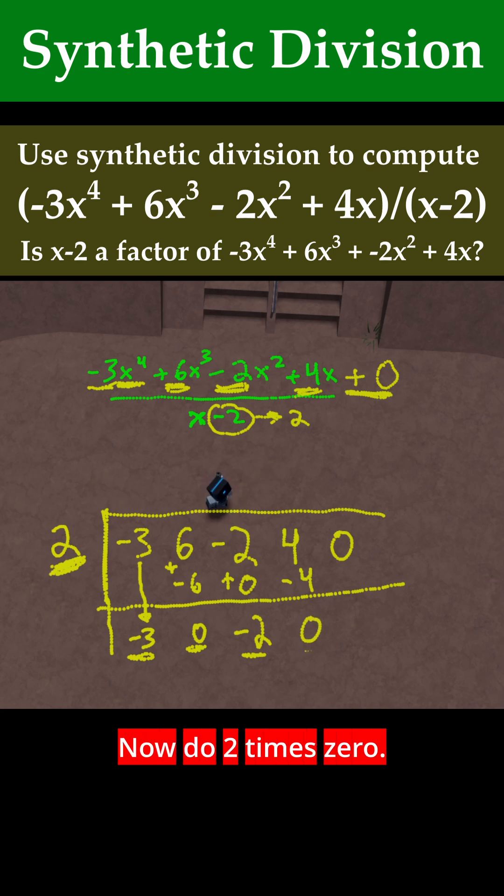Now do 2 times 0. 2 times 0 is just 0. Then 0 + 0 is just obviously 0. So now we have all the coefficients in our answer.